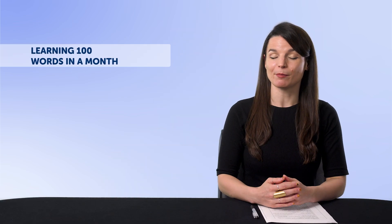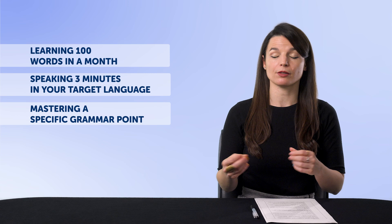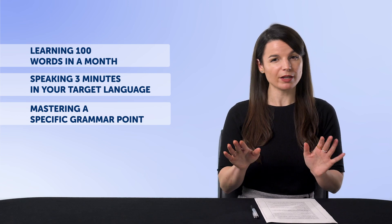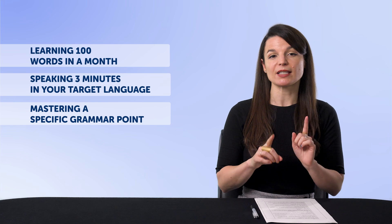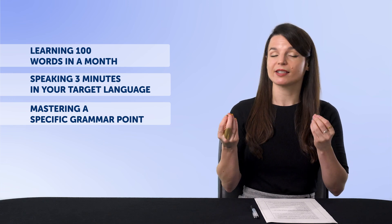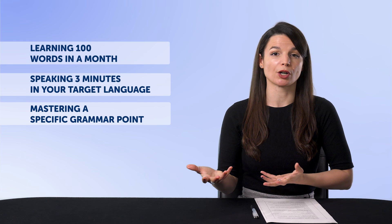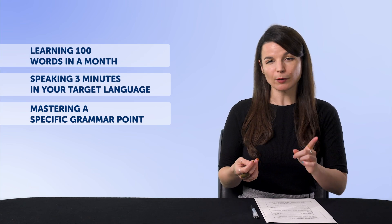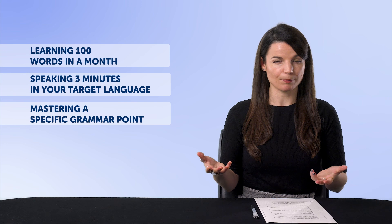One of the best ways to make progress in your target language is to define what that progress is and be super specific about it. For example, learning 100 words in a month, speaking three minutes in your target language, or mastering a specific grammar point so you can use it freely in conversation. When you have a specific goal or number, you know exactly what to look for. Without a specific number, you'll never know what you're aiming for. So if you want to get more specific with your learning, here are a few things you can do.